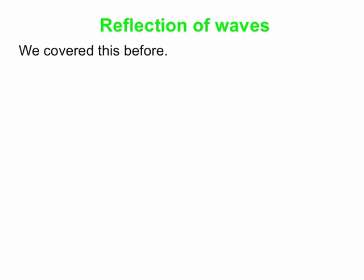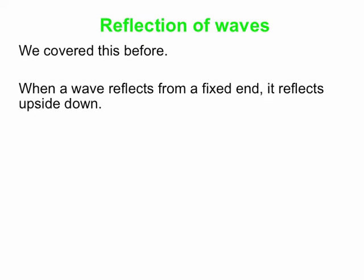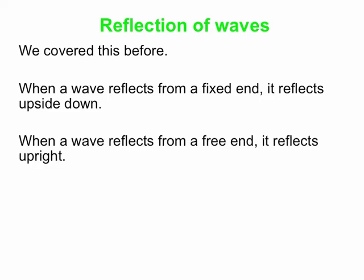When we have a wave reflecting from a fixed end, such as on a guitar string, it reflects upside down. When a wave reflects from a free end, such as the end of an open pipe, it reflects upright. This actually has some bearing on thin film interference.